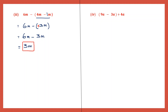Next question. Let's open the brackets first. 9a minus 3a: 9 minus 3 is 6. So 6a plus 4a. Now 6 plus 4 is 10. The answer is 10a. So question 4, answer is 10a.